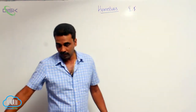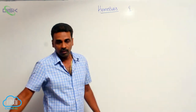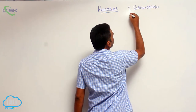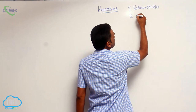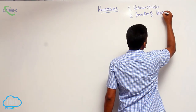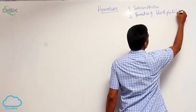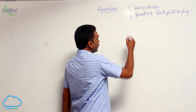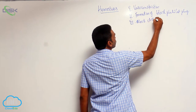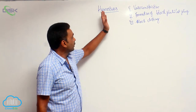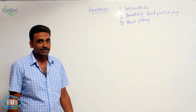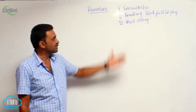The first mechanism is vasoconstriction. The second is formation of a blood platelet plug. The third mechanism is blood clotting. So bleeding is arrested — also called hemostasis — by these three basic mechanisms.